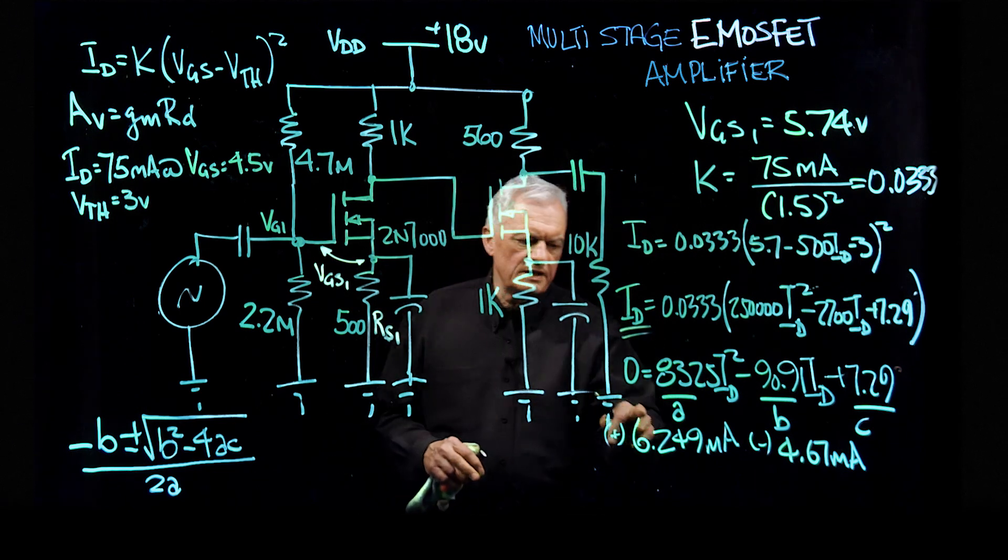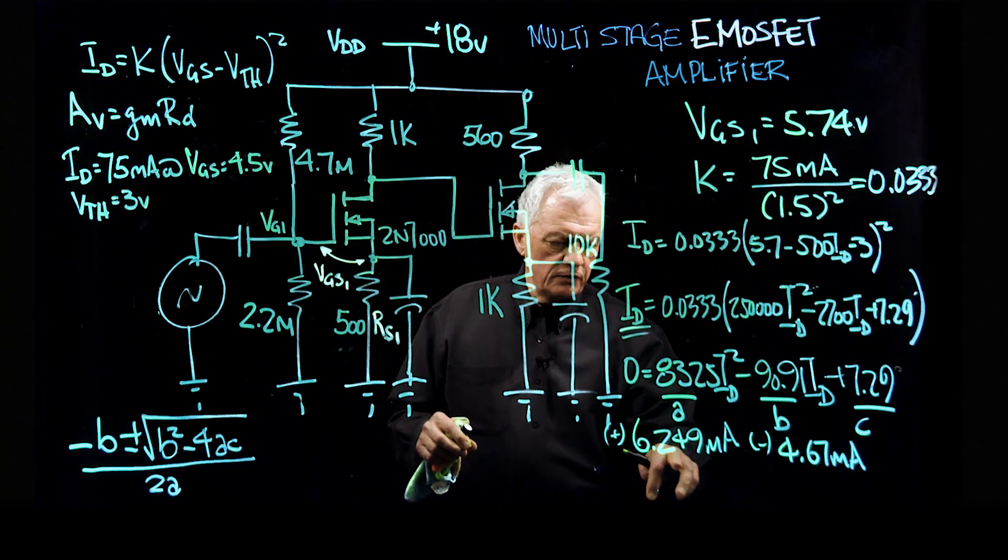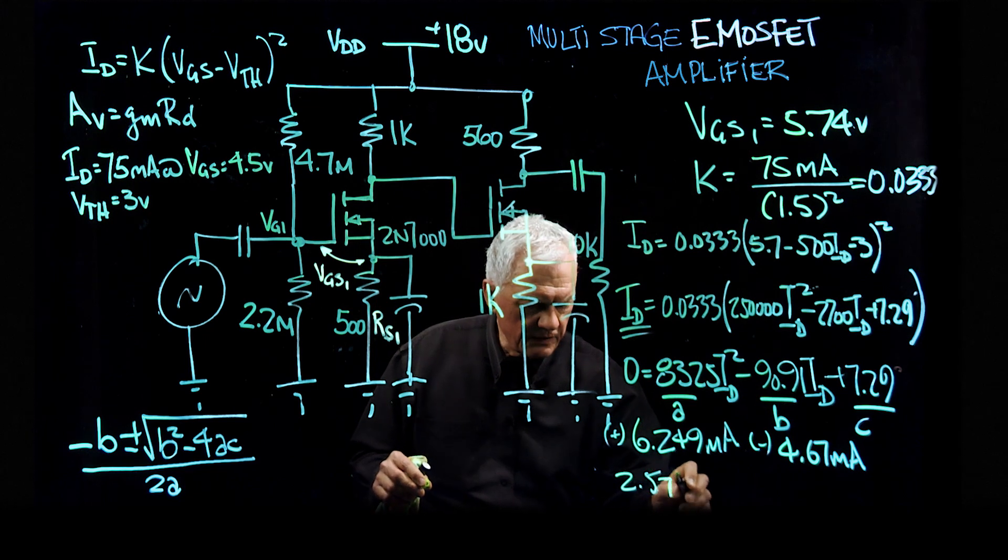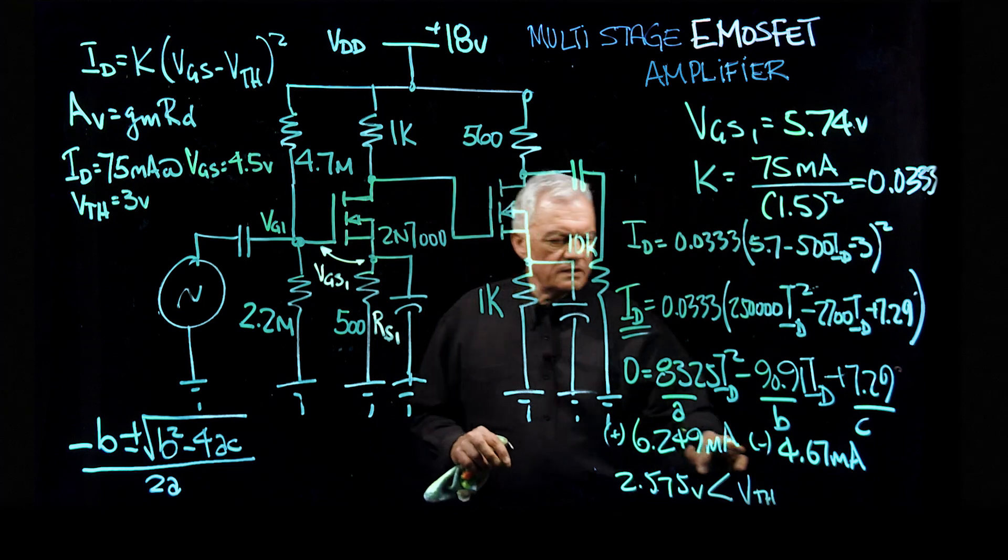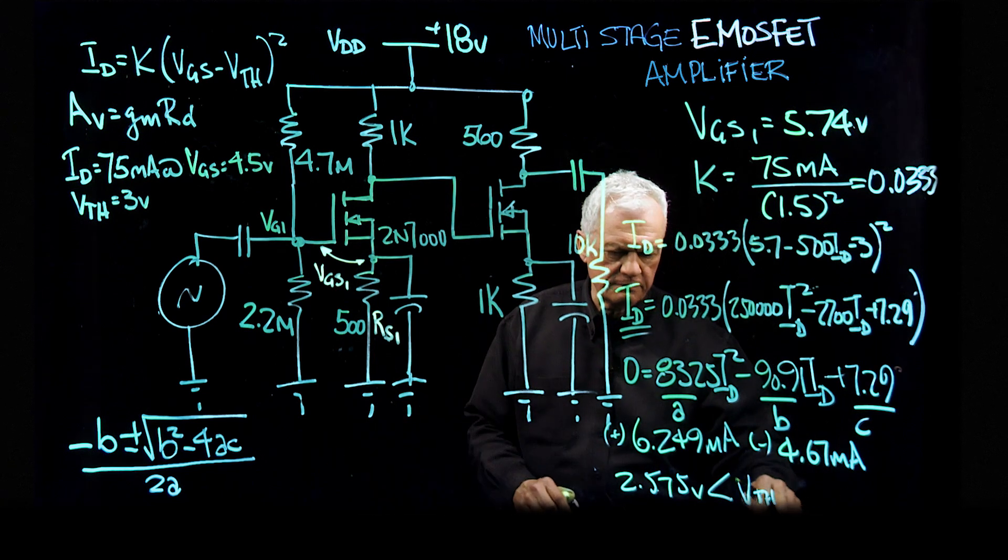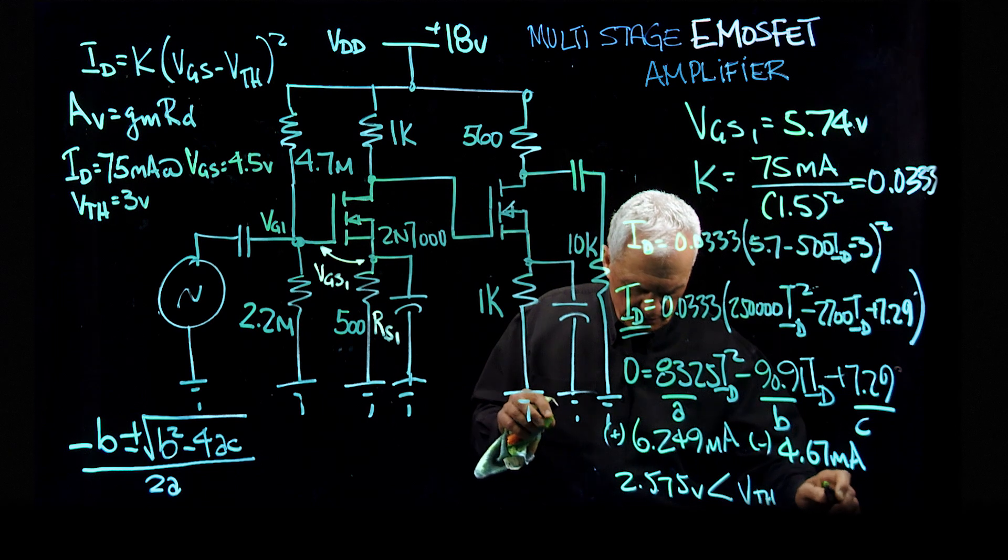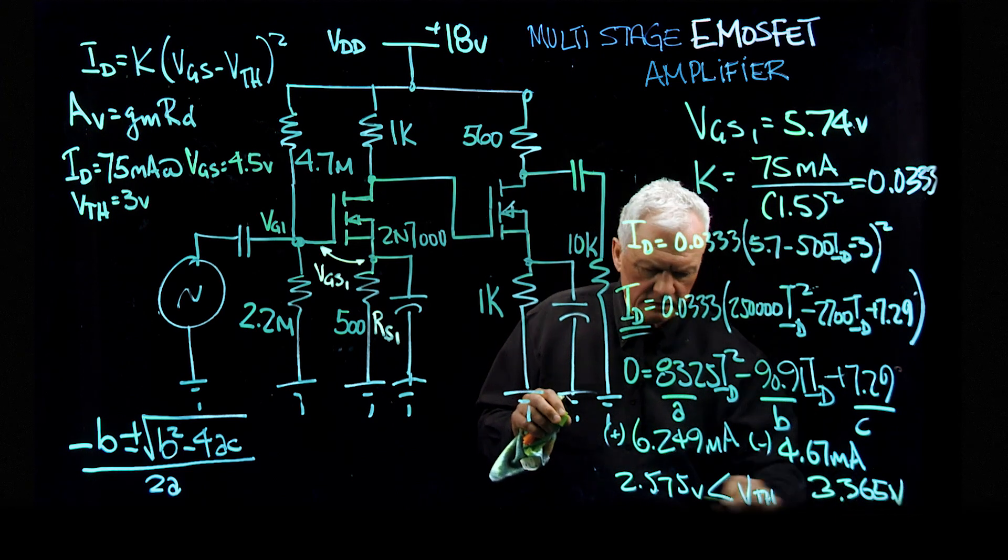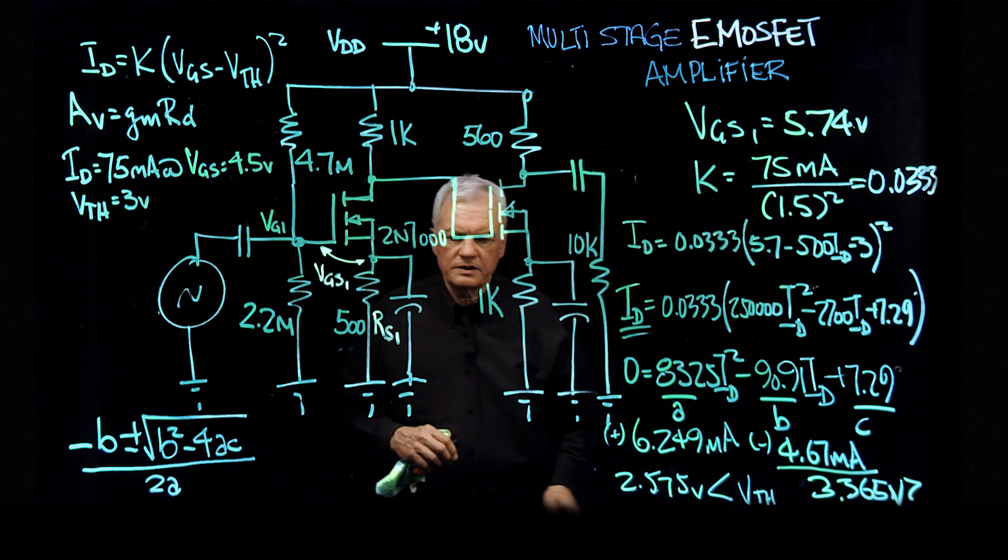Well, what you will have to do is, you take this current and multiply by that resistor, and look at the voltage that is generated. When you do it with the 6.249 milliamps, you get a voltage of 2.575 volts, which is less than the threshold voltage. You need to have at least 3 volts to turn this device on. When you do it with the 4.67 milliamp, you will get a different expression. When you plug it back into the Kirchhoff's voltage loop equation, you will get another number, which is going to be 3.365 volts, which is greater than the V threshold. So that being the case, this is the correct current that we are going to use in our Kirchhoff's loop equation.